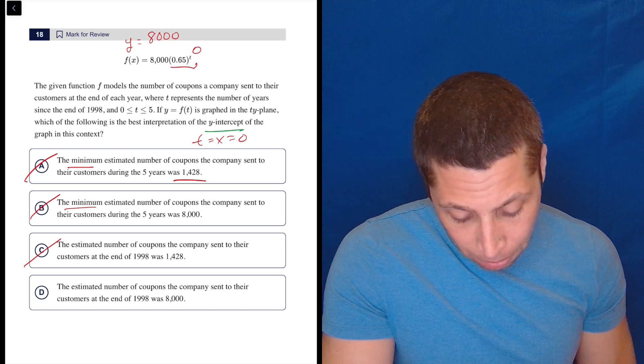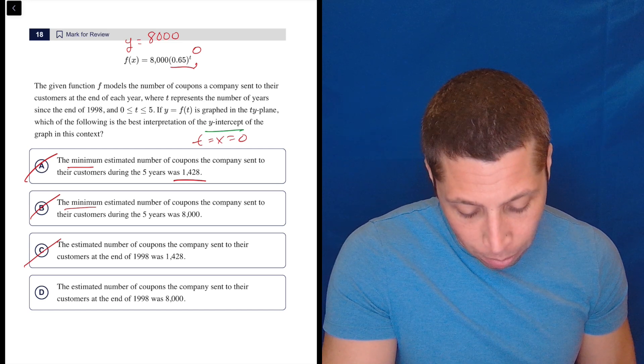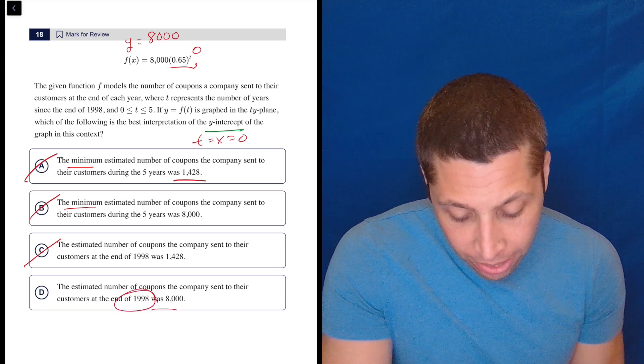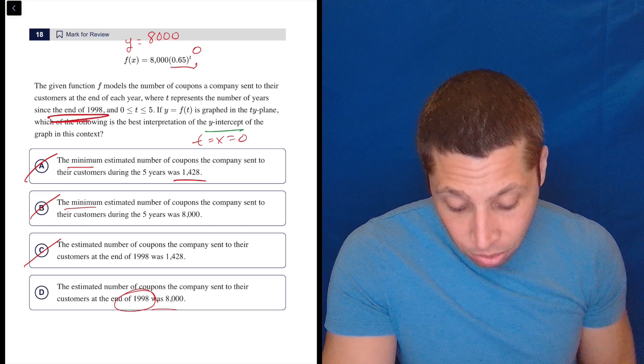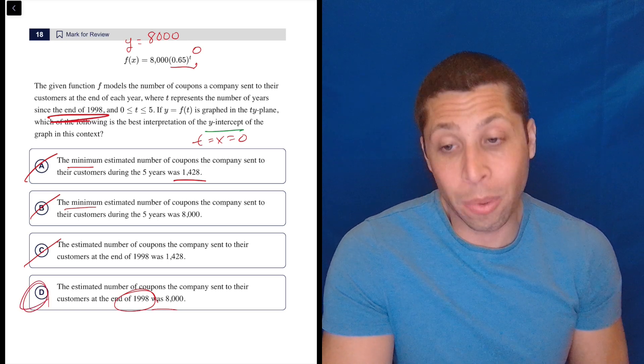The estimated number of coupons the company sent to their customers at the end of 1998 was 8,000. Because what is 1998? 1998 is the starting point, that's the zero point. So that is the starting value. They started with 8,000. So it's D.